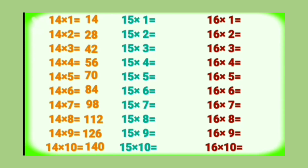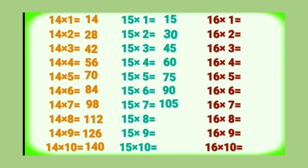Table of 15: 15 1's are 15, 15 2's are 30, 15 3's are 45, 15 4's are 60, 15 5's are 75, 15 6's are 90, 15 7's are 105, 15 8's are 120.